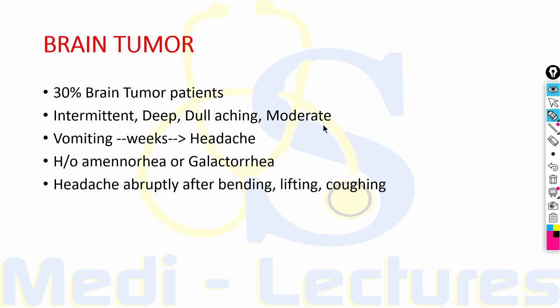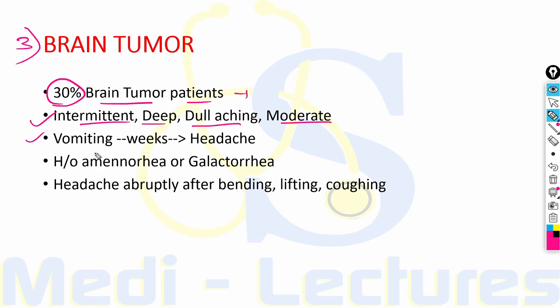Another cause of secondary headache is brain tumor. Although only 30% of brain tumor patients present with headache as their chief complaint, it is usually intermittent, deep, dull aching and moderate in intensity. Patients presenting with vomiting many weeks before the headache usually have posterior fossa tumors. Vomiting preceded by headache in a brain tumor patient suggests a posterior fossa location.